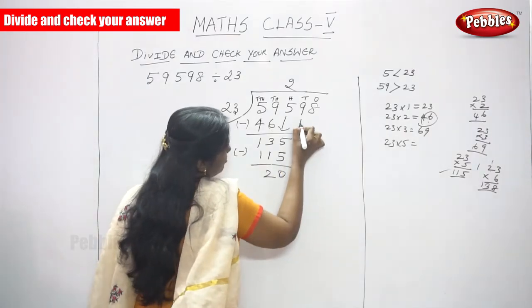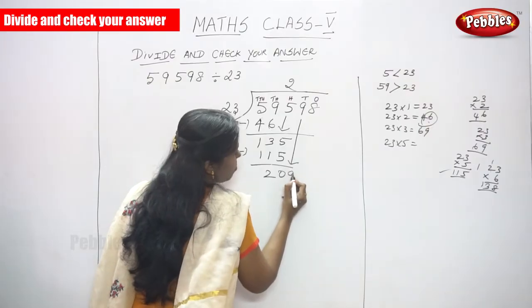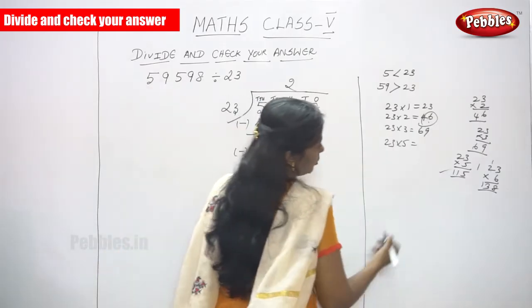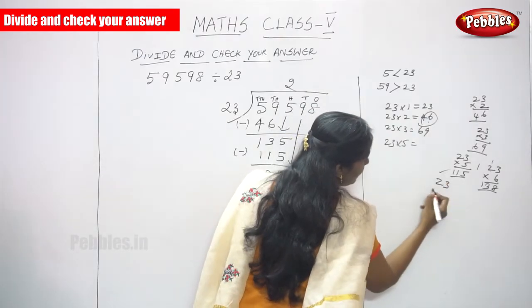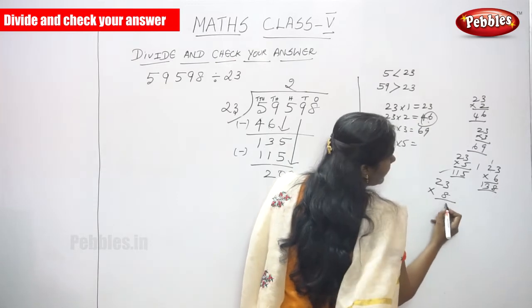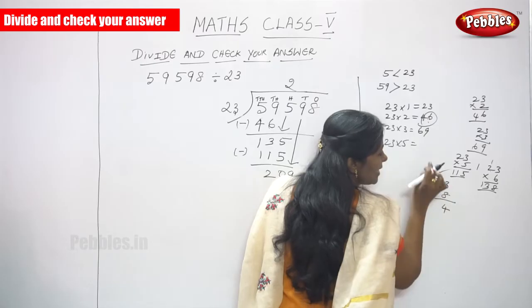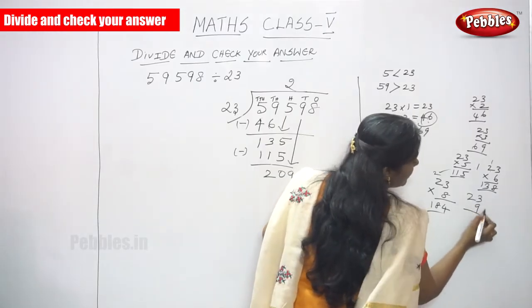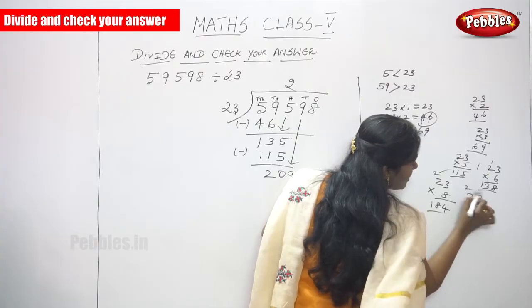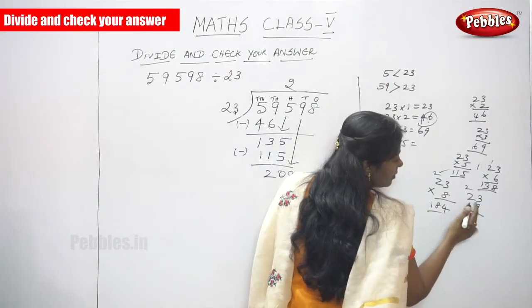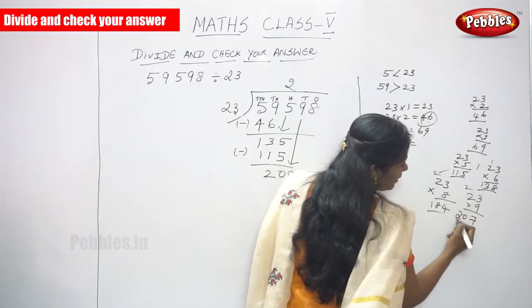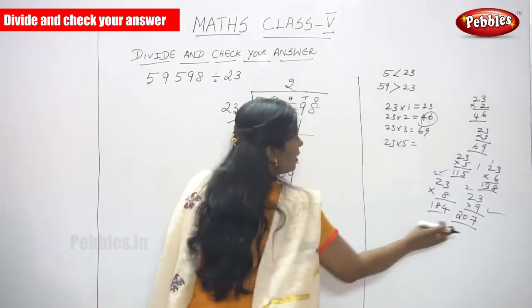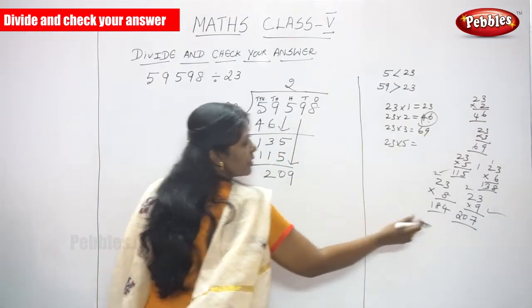Go to the next digit — that is 9. So, the number you get is 209. So, again you have to do this. 23 multiplied by 8: 8 threes are 24 carry 2, 8 twos are 16, 16 plus 2 is 18 — so 184. We'll go for some other number. 23 into 9: 9 threes are 27 — carry 2 up — and 9 twos are 18, 18 plus 2 is 20 — so 207. And 207 is less than 209, so you can choose this number.